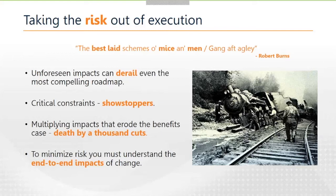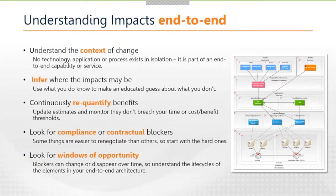How do we actually minimise these risks? Fundamentally you need to understand the context of your road map. There are some simple things architects can do to minimise risk — you can't remove it, but you can reduce it. One area architects often go wrong is not really understanding the context of what they're road mapping. You might be road mapping a technology or application, but regardless of which part of the architecture you're working in, that application or technology is just part of the stack of things — including people and process — that deliver some kind of business benefit.